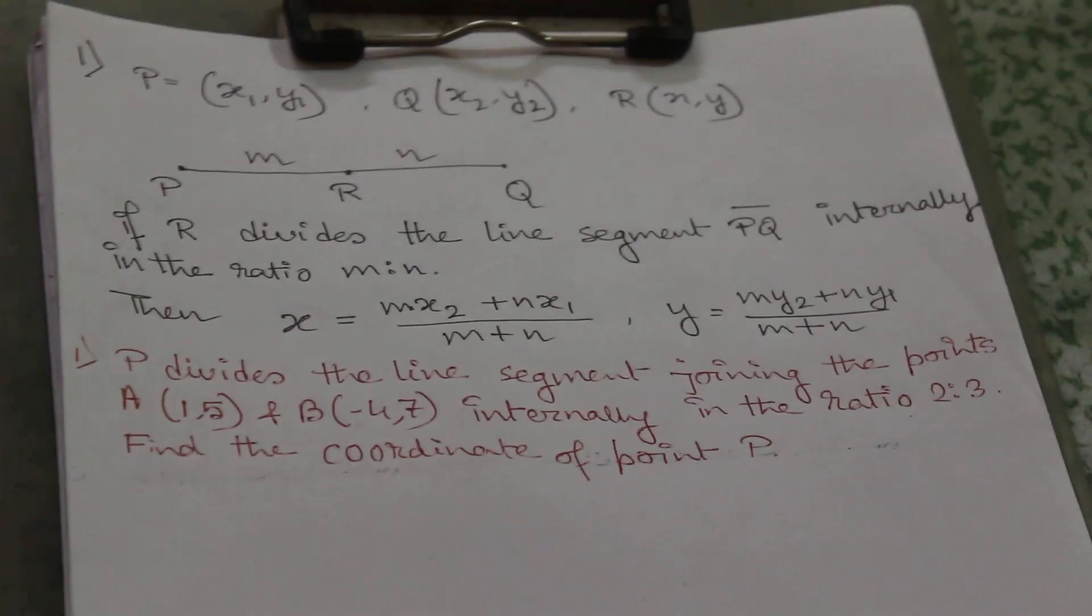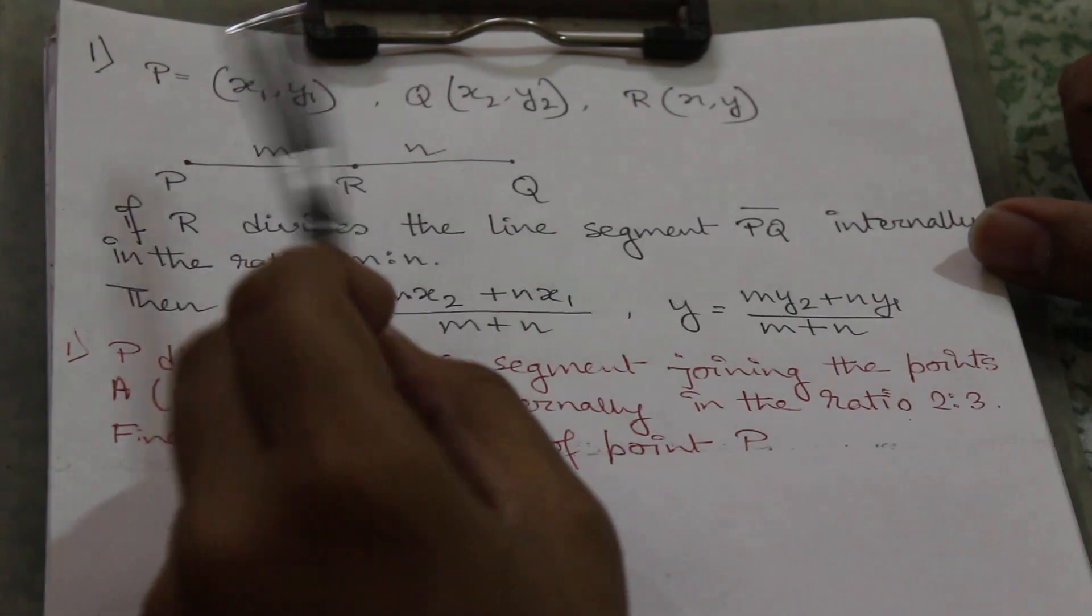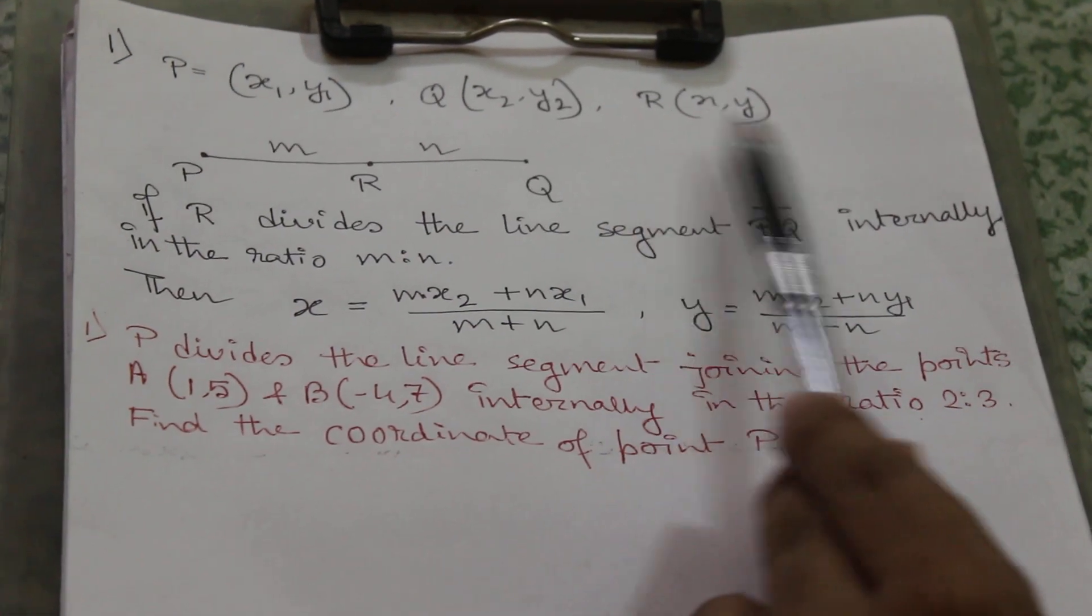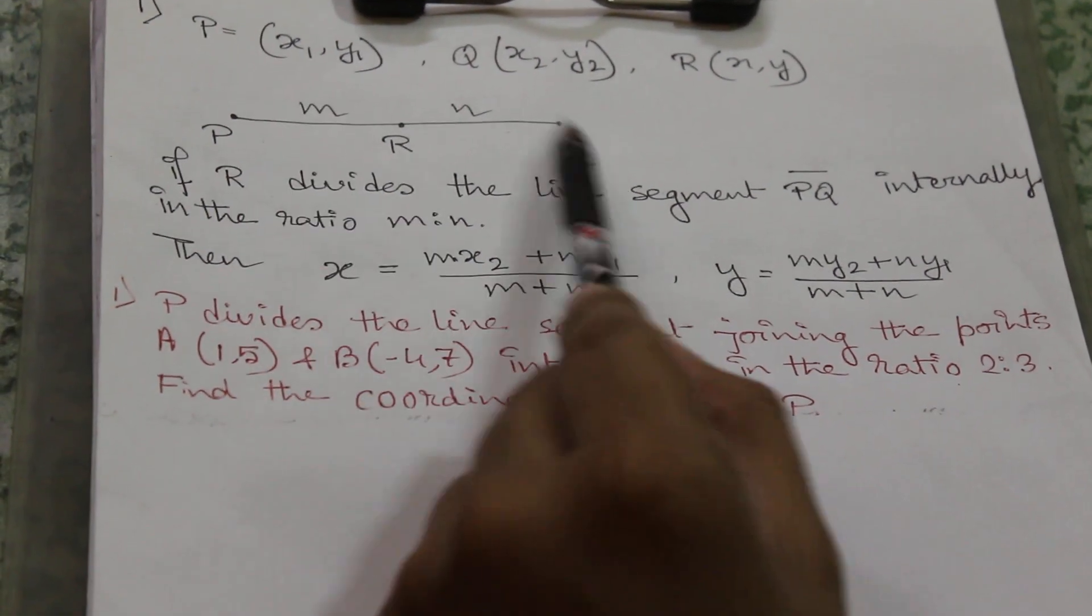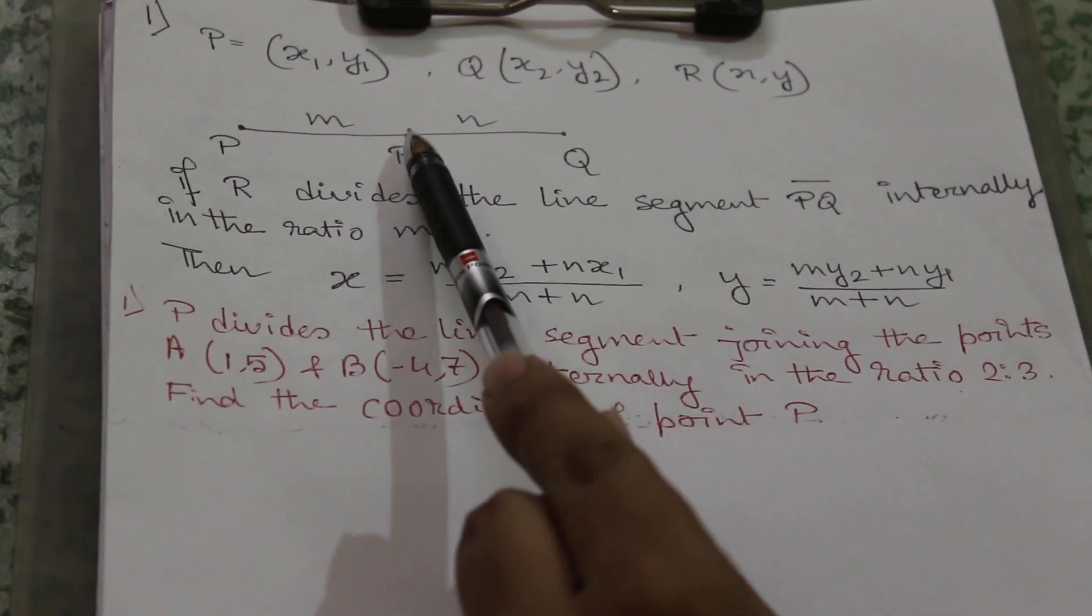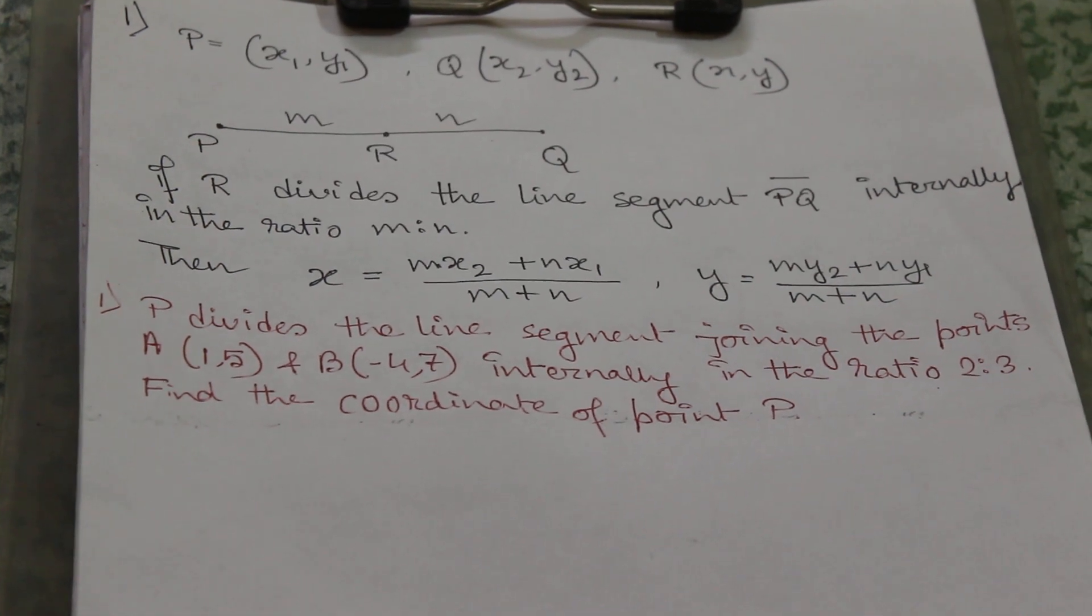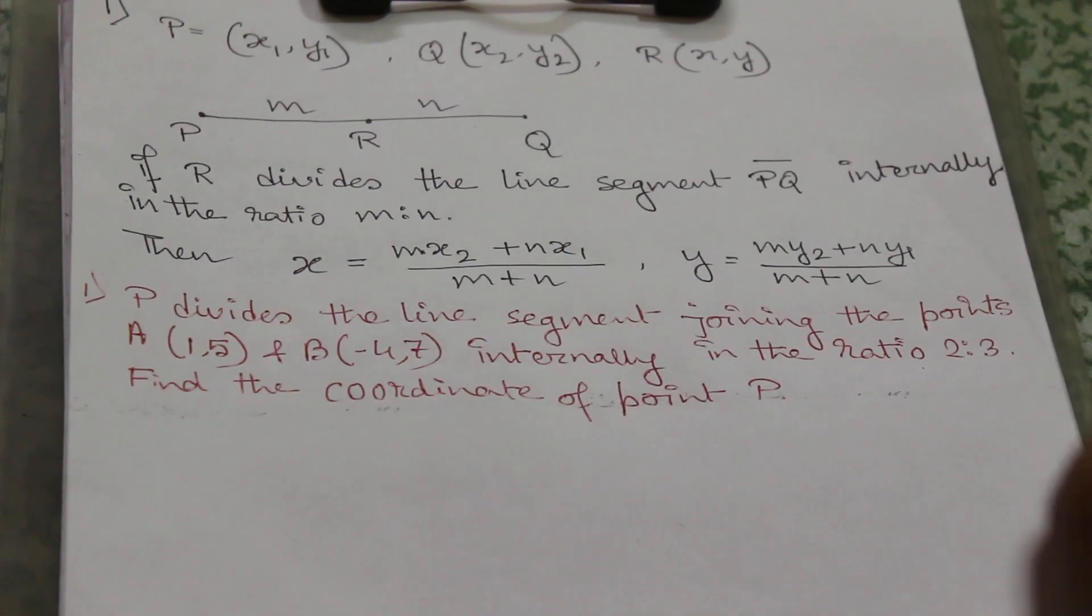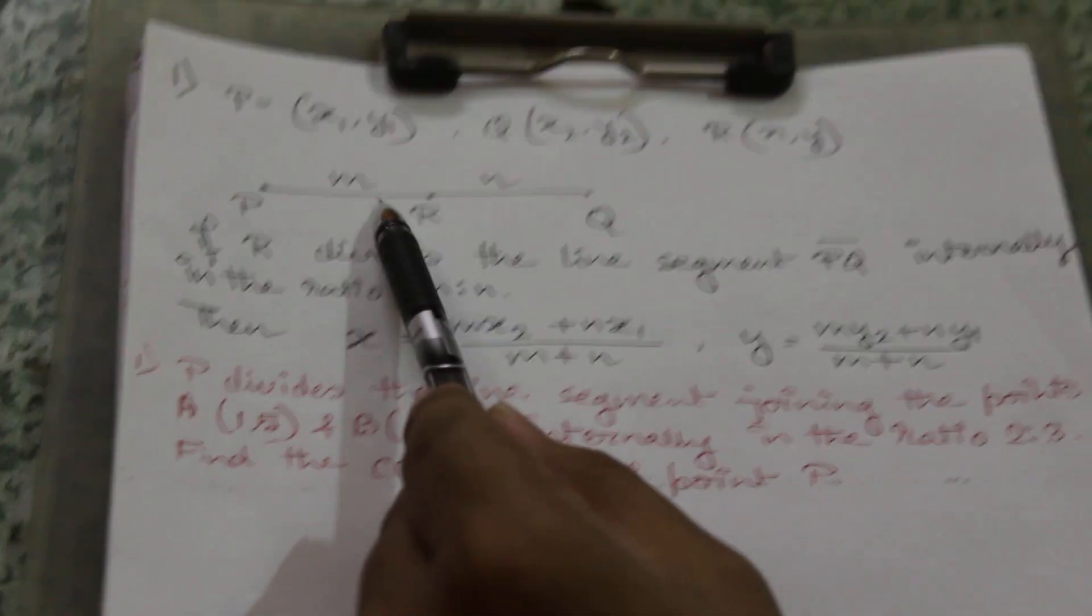First we will discuss internal division. Let there are three points: x1,y1 which is P, x2,y2 which is Q, and x,y is R. Now we join the line segment between two points, and in between them there is one point that lies between P and Q, that is R, whose coordinates are x,y which divides the line segment internally in the ratio m to n.